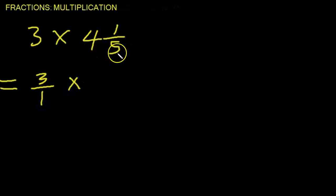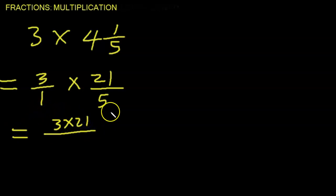And 4 and 1 fifth can be written as 5 times 4, 20, and 1, 21. That's 21 over 5. So again, multiplying numerator by numerator, that's 3 times 21. And denominator times denominator, that's 1 times 5.